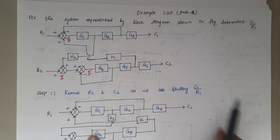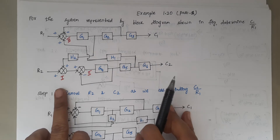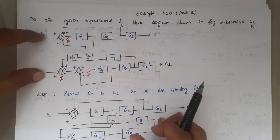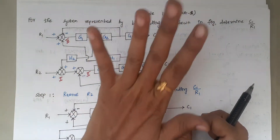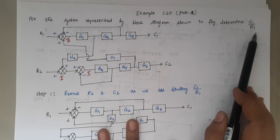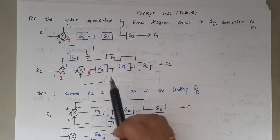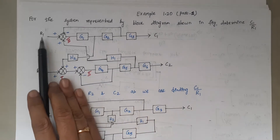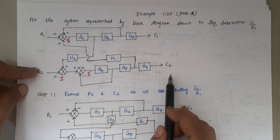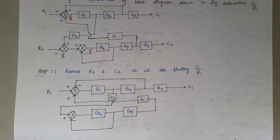This block diagram has multiple inputs and multiple outputs — that is, two inputs and two outputs. We are asked to find only the C1 by R1 ratio. So our first step is to consider only R1 and C1, and eliminate R2 and C2.